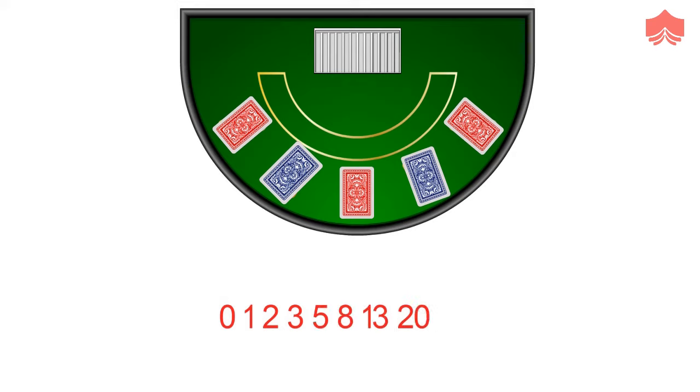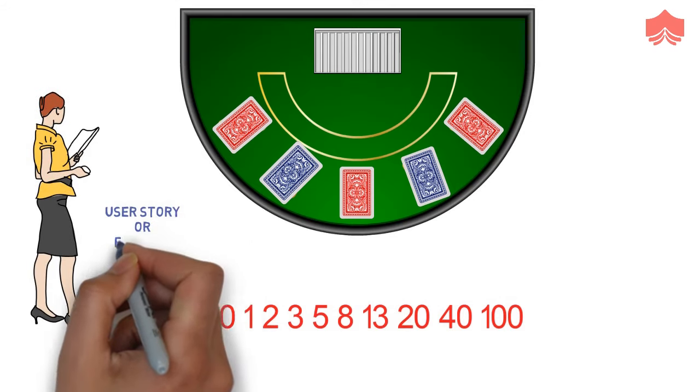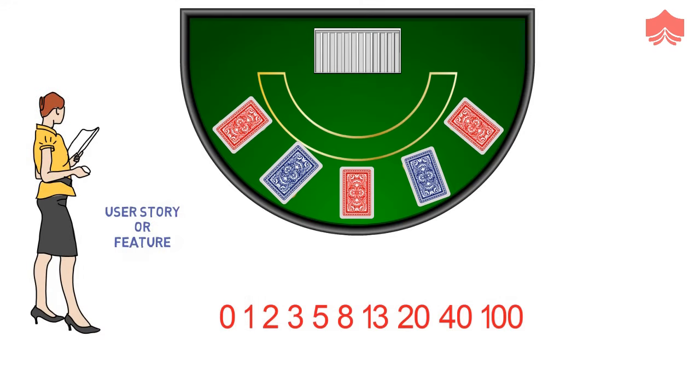At the start of the planning poker session, every person in the team holds a deck of planning poker cards. Each card contains a value like 0, 1, 2, 3, 5, 8, 13, 20, 40, and 100. The product owner or customer then reads an agile user story or describes a feature to the estimators.